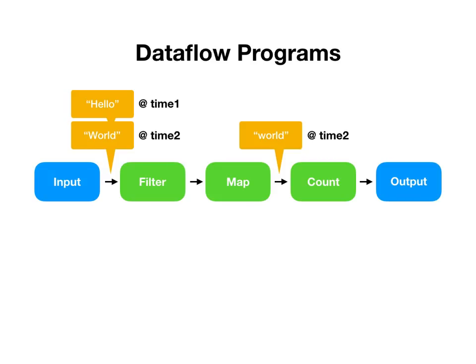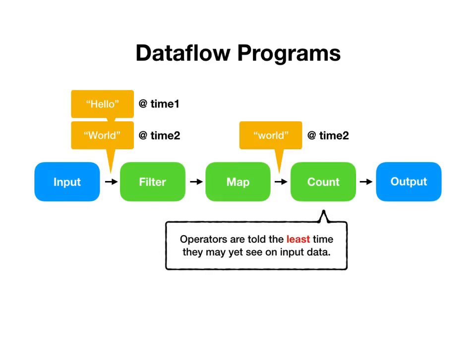So count is very interested in learning that there will be no more records with time two, at which point it can produce a correct output. These timestamps are the language in which the system speaks to the operators, telling them the least time they may yet see on any of their input data. That allows operators like count to await that signal, then perform their computation and produce correct output — otherwise they would never be quite sure if it was safe to produce any particular output.